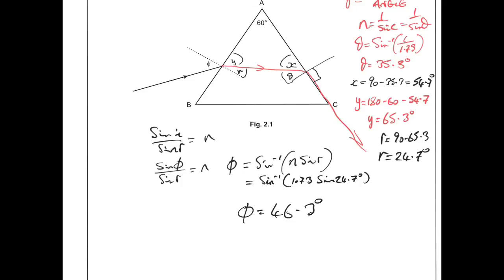A point to note: your calculator mode will affect outcomes when you take sines and cosines. Make sure your calculator is in degree mode if you're working with angles in degrees — if it's in radian mode none of these answers will come out right. We're working in degrees here so the calculator should be in degree mode. That concludes questions 1 and 2 from that paper. Thanks for watching.